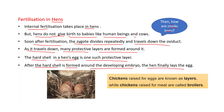Chickens can be categorized into two types: chickens raised for eggs are known as layers, and chickens raised for meat are called broilers.